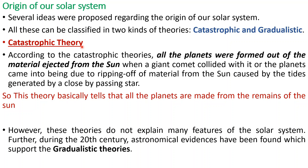Several ideas were proposed regarding the origin of our solar system, and all these ideas or theories can be classified into two types: one is catastrophic and another is gradualistic. Let us first discuss the catastrophic theory.